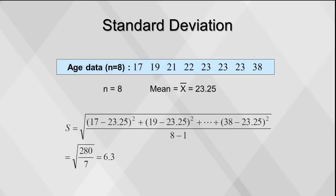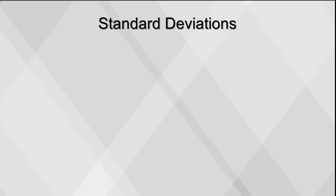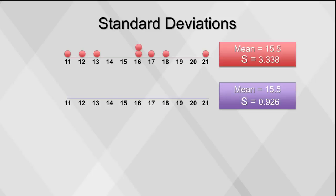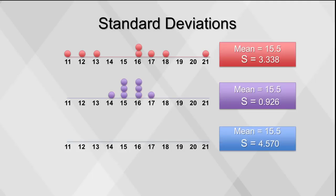Here's an example of the standard deviation using age data. Note that sample standard deviation is represented by the symbol S, and x-bar represents the sample mean. The standard deviation tells us how close or far apart data are from the mean. The higher the standard deviation, the greater the spread. In red is an example of a moderate standard deviation; purple shows a low standard deviation with data concentrated near the middle; blue shows a high standard deviation with data concentrated on the outside.